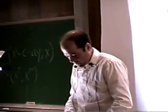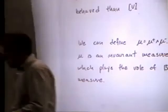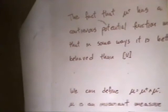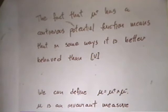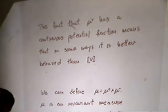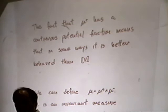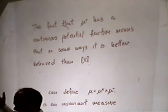Another nice feature of mu plus is that its potential function G plus is actually a continuous function. That's a nice property for currents to have — that they have a continuous potential function. In particular, it's a property that the fundamental class of a variety does not have. In that case, we're taking log of a polynomial — where the polynomial goes to zero, the potential function is not continuous, it goes to minus infinity. So this has some geometric consequences: mu plus is better behaved than some other currents. In fact, from the point of view of an analyst, it's better behaved than the fundamental class of a variety.